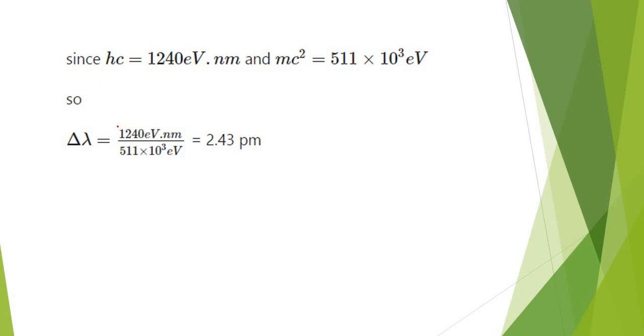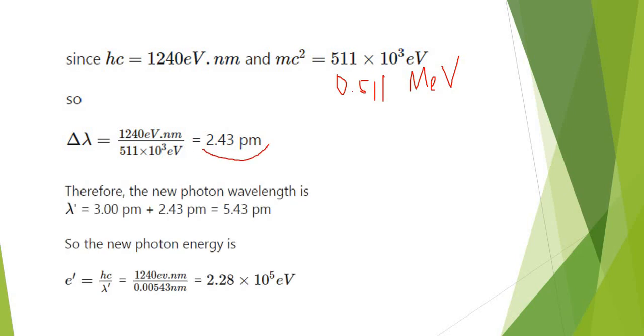Substitute the value. Then you get this mc squared equals to 511 times 10 to the power of 3 electron volts. Or you may find this number more frequently 0.511 mega electron volts. This is just the constant. You have this Compton scattering wavelength 2.43 picometer. This is the Compton scattering.